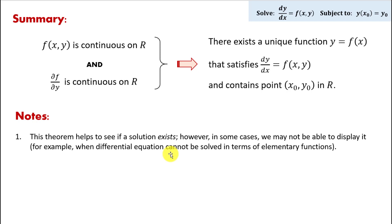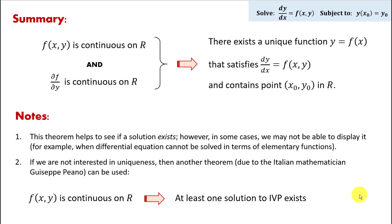The second note: if we're not interested in uniqueness and only want to check if a solution exists, we can use another theorem proved by the Italian mathematician Giuseppe Peano. I won't state it in official form, but its summary is that the only condition sufficient for the existence of the solution is that function f of xy is continuous on R. If we can show that, it indicates that at least one solution to the initial value problem exists.